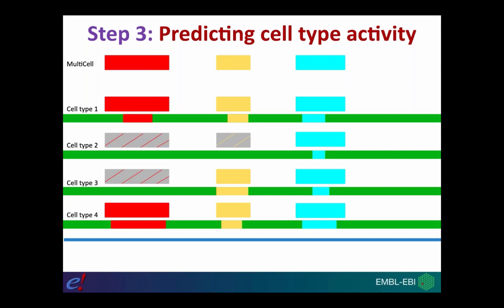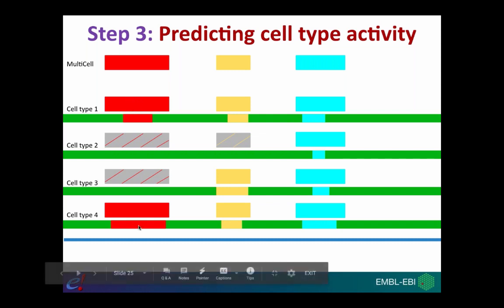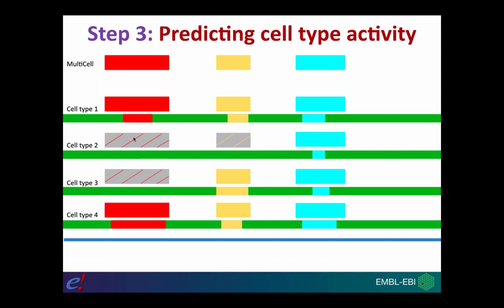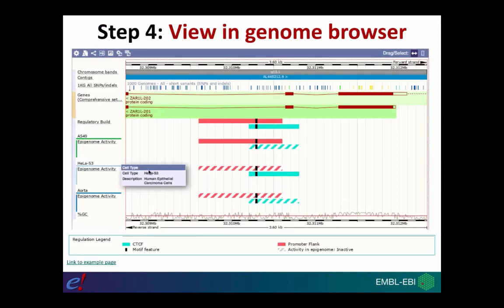The final step is to predict the activity of these regulatory features in the different cell types. For each feature, we look at which cell types have underlying evidence — for example, a feature might be active in cell types one and four, while being predicted as inactive in cell types two and three. We do this for all features and all cell types, and then visualize this data in the browser so you can see activity across cell types and the underlying data.